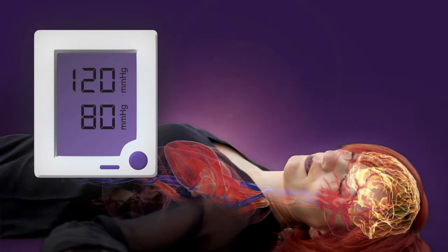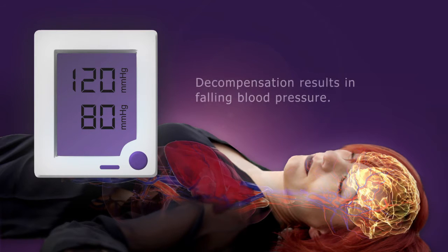This compensation also occurs in the setting of shock. As tissue perfusion drops, the body attempts to maintain blood flow by increasing the respiratory and heart rates, and by constricting peripheral blood vessels. But if the cause of the shock is not reversed, the body eventually loses its ability to compensate, and the blood pressure begins to fall.